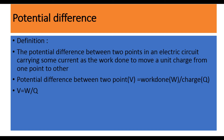Now we see the definition for potential difference. The potential difference between two points in an electric circuit carrying some current is the work done to move a unit charge from one point to another. Work done means any object is displaced from one position to another in the presence of force. So the potential difference between two points equals work done divided by charge — work done is represented by W and charge by Q — so V equals W by Q.